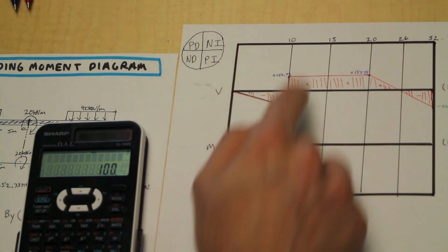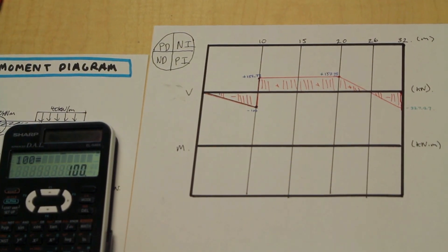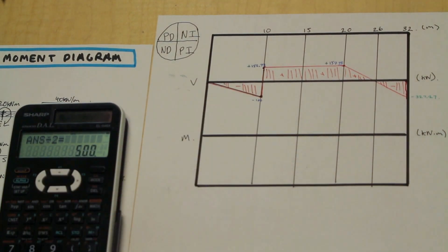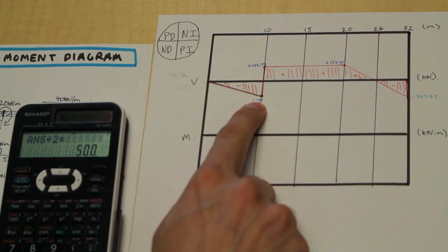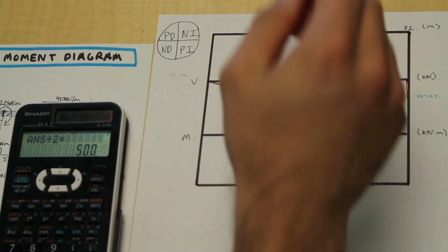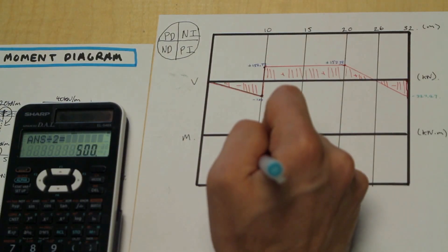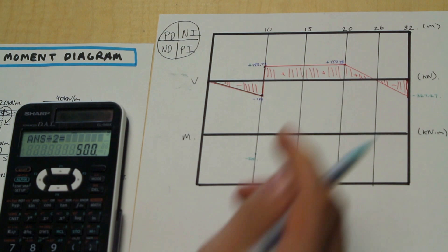So what do we have? We have 10 meters, we have 100, divided by 2, and we're going to get 500. So 100 times 10 divided by 2, it's negative, it's moving down. So we're going to have a negative 500 kilonewton meter moment right here.